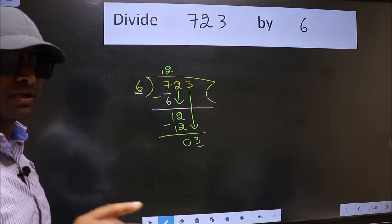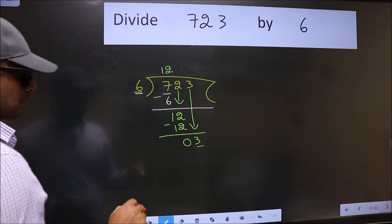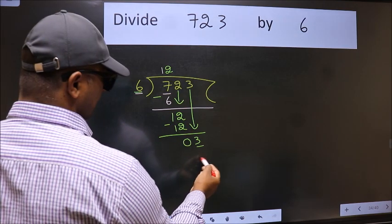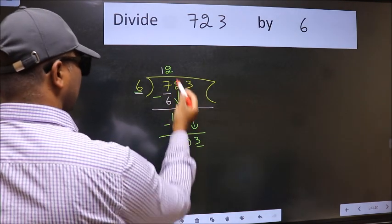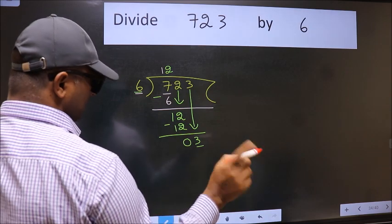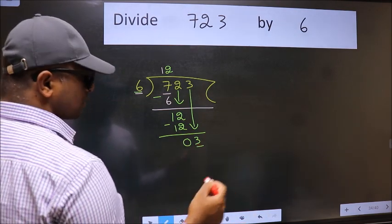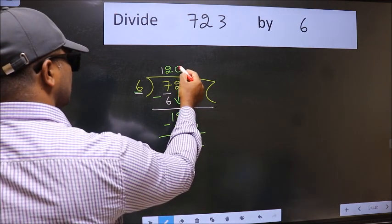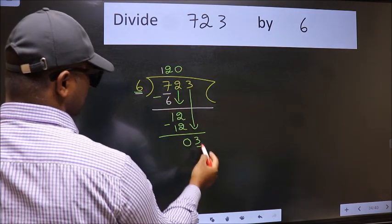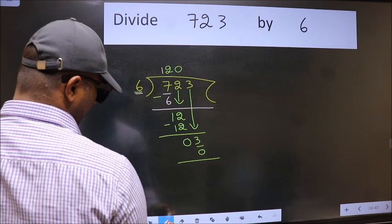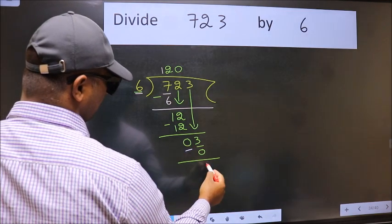Instead of that, what you should think of doing is which number should we take here. If I take 1, we will get 6. But 6 is larger than 3. So what we do is we take 0. So 6 times 0 is 0. Now we subtract. We get 3.